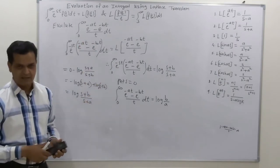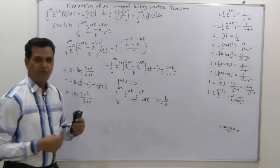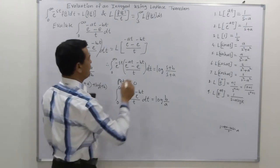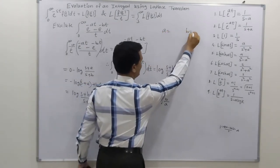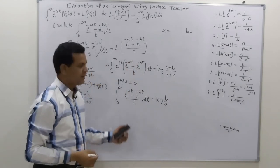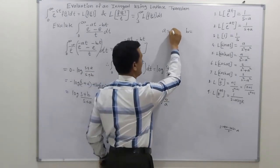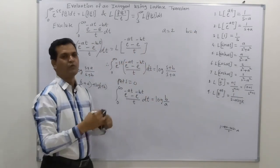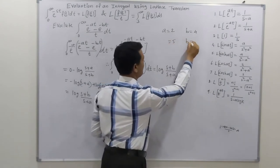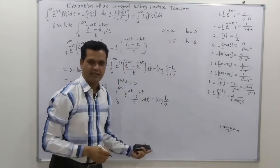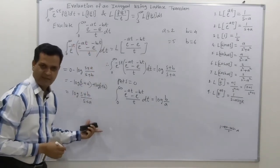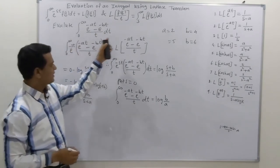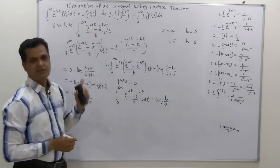Here we used e^(-at) and e^(-bt) in the numerator. By choosing different values of a and b you get different examples — for instance, a = 2, b = 4, or a = 5, b = 6. In this way any particular case can be solved using this standard format.